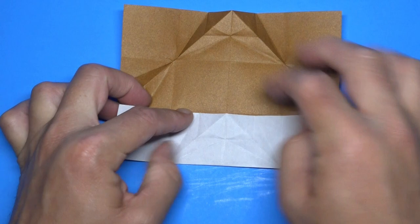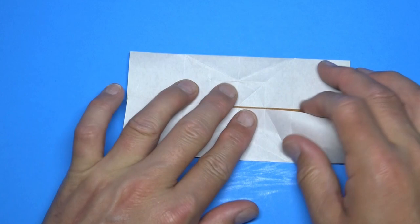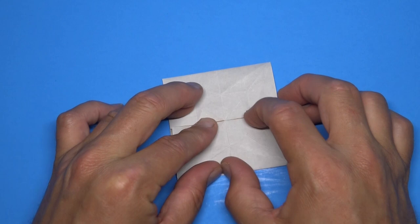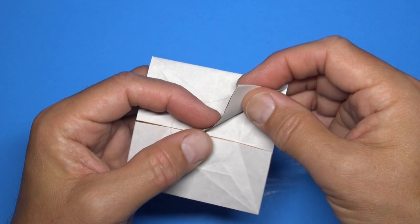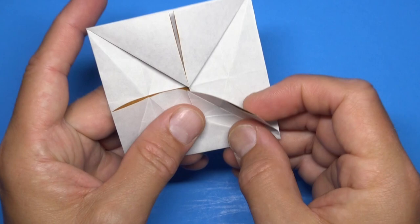Okay, colored side up. Fold the edges to the middle. And again. Now fold these flaps up and these flaps down.